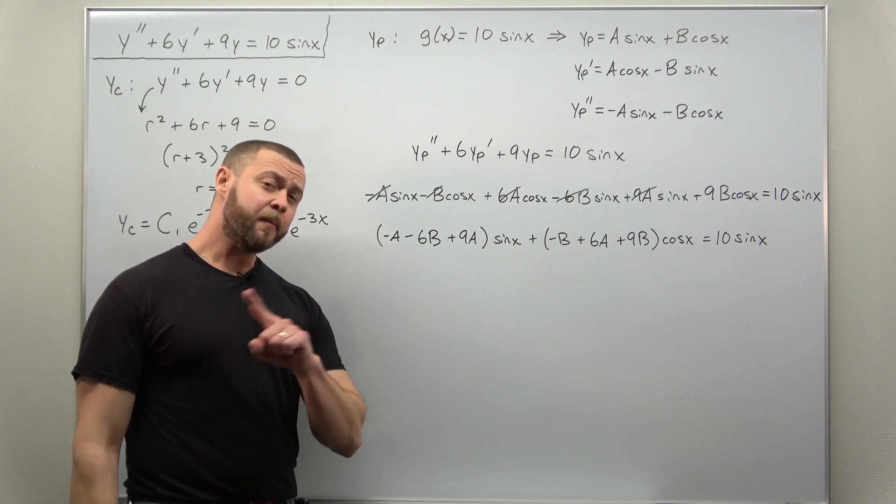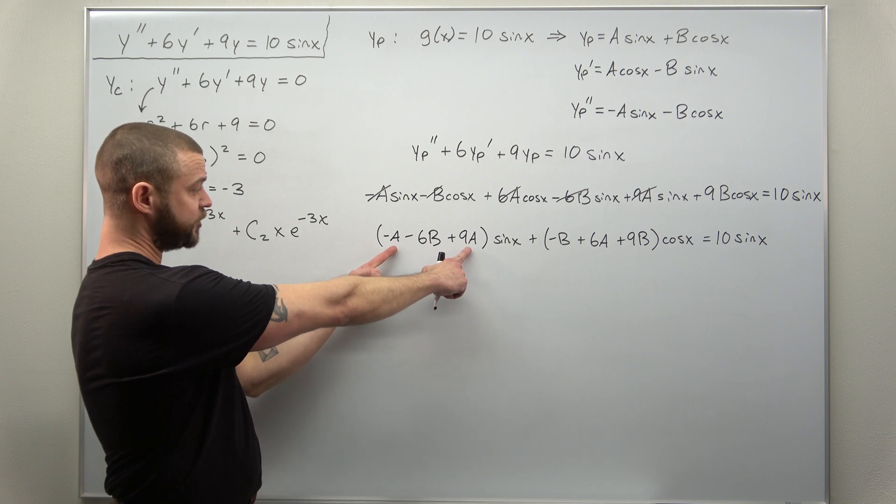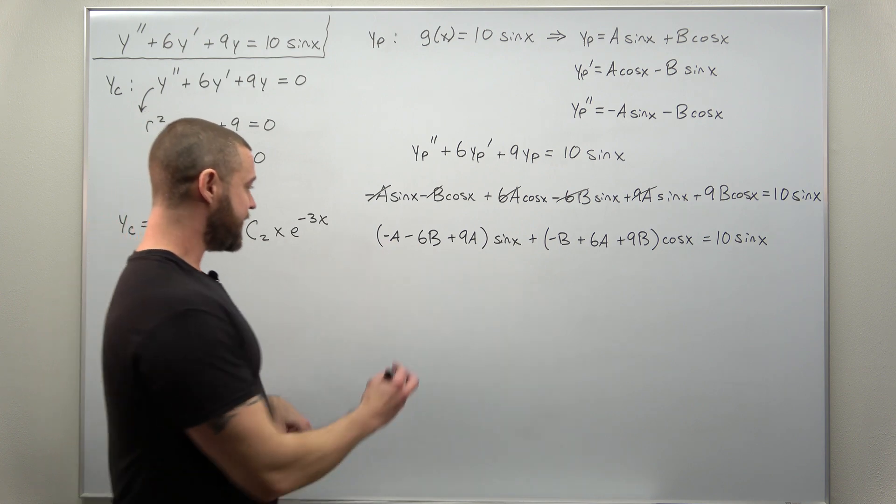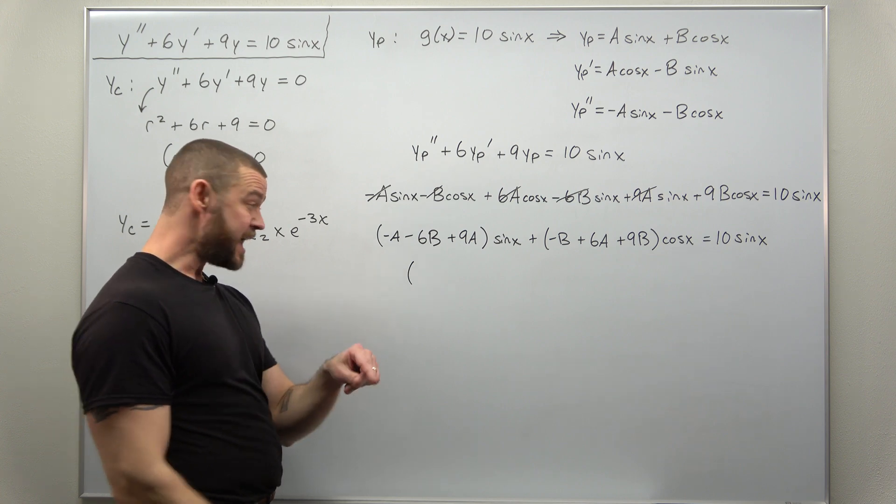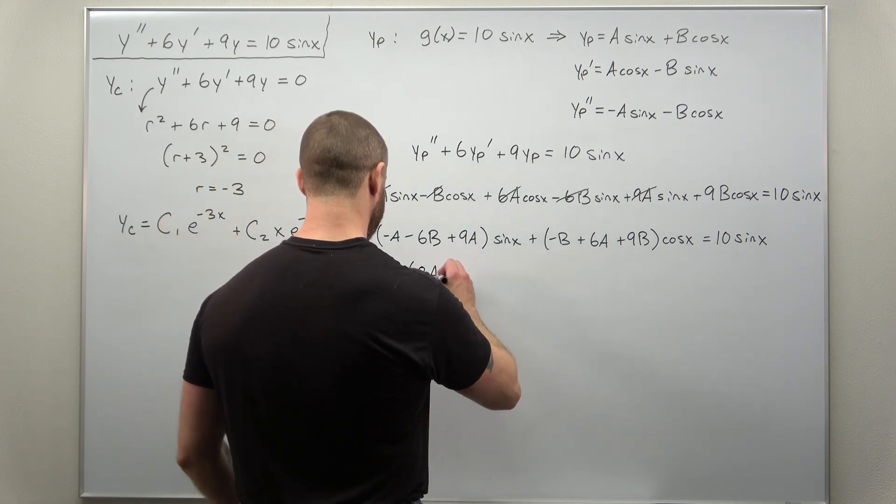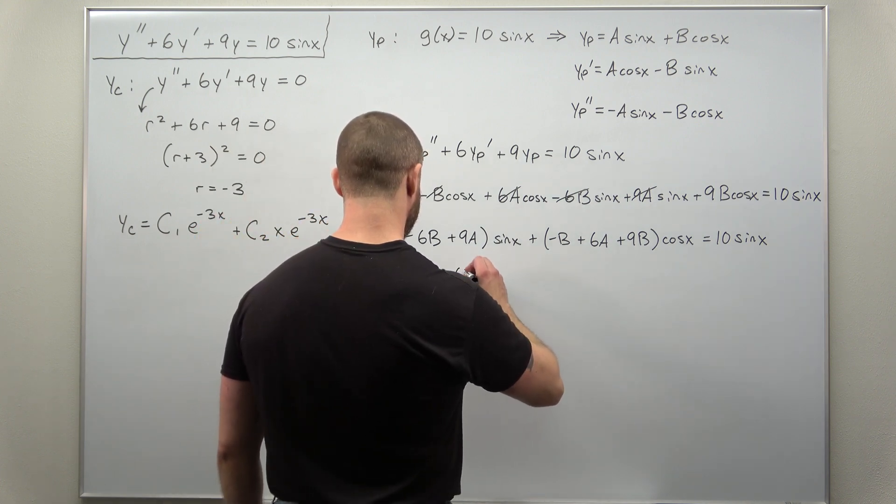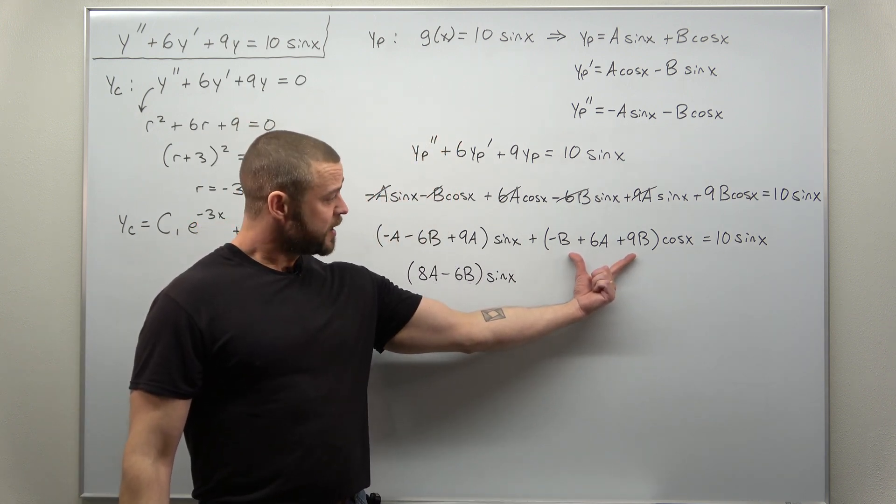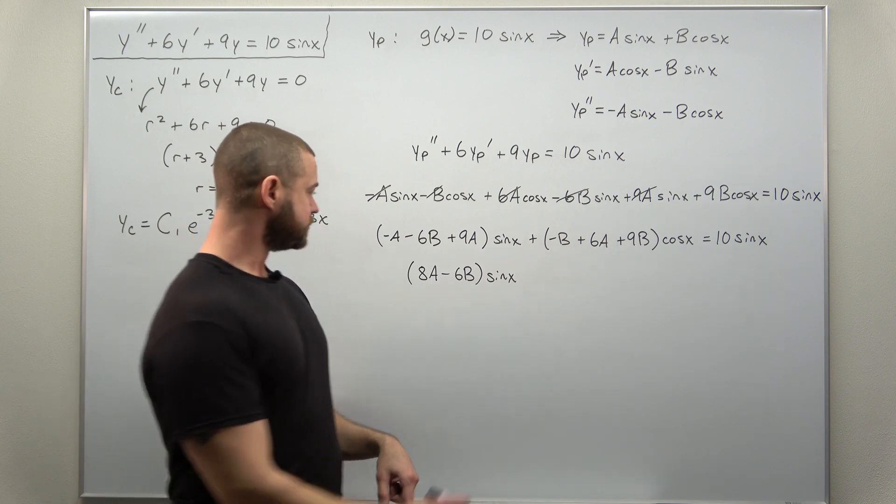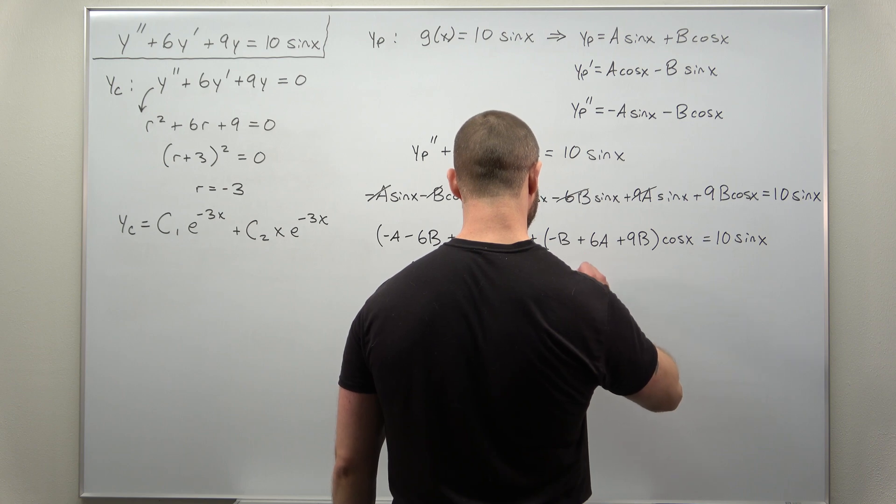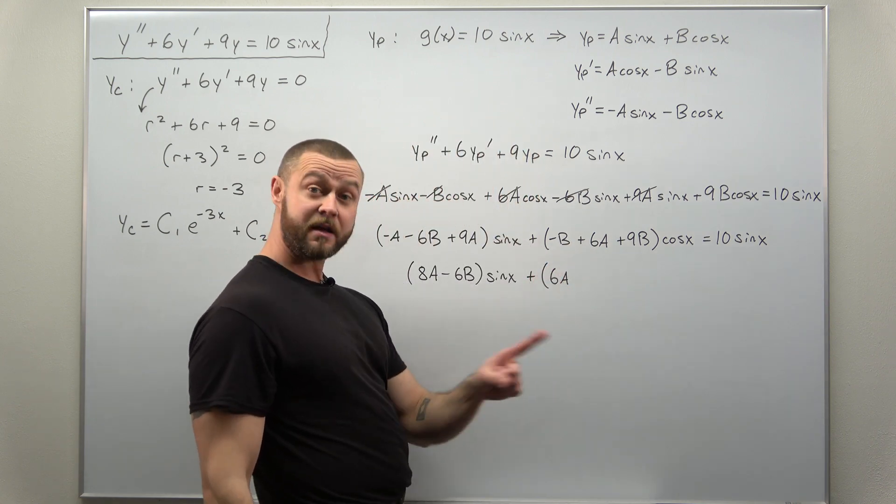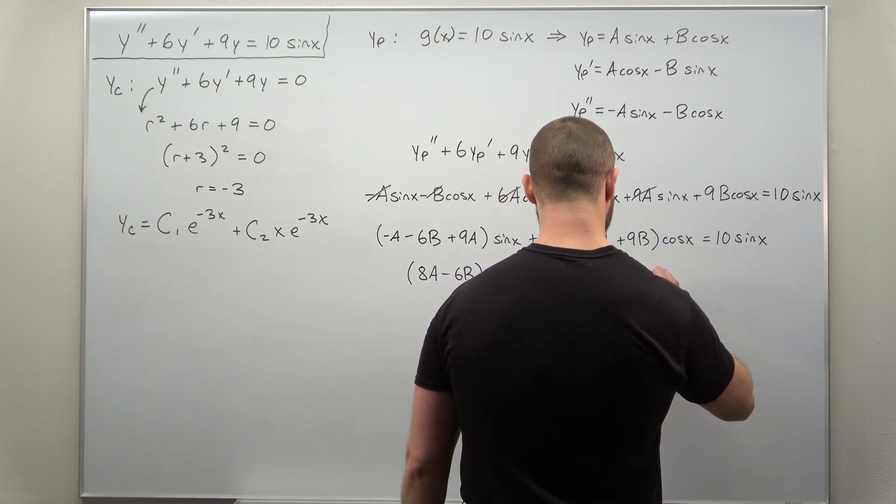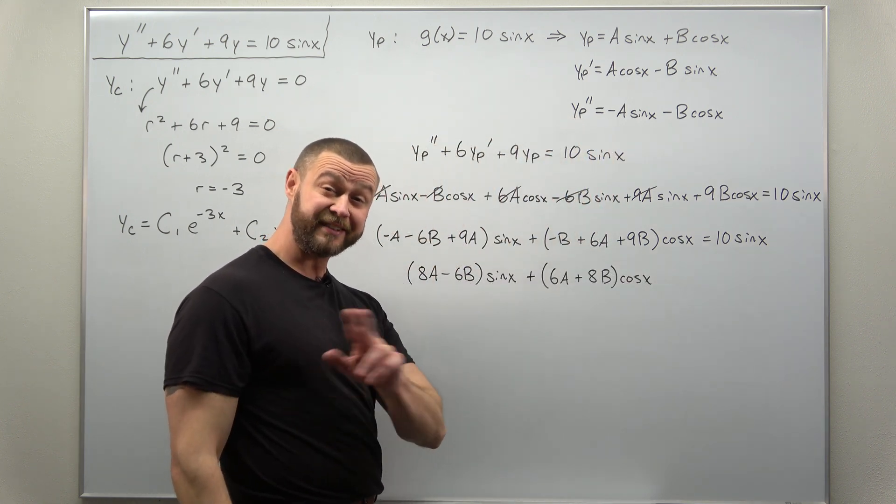You might have been okay combining some of your like terms here. I have like terms involving a. I can clean up the part in parentheses a little bit. 9a and negative a, that's 8a, minus 6b times sine of x. And your equation here, we can combine the b's together. We get 6a, but now 9b minus b combines to 8b times cosine. And the right-hand side is still 10 sine of x.